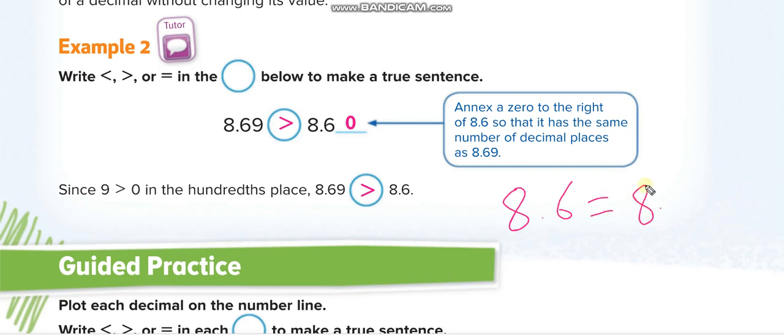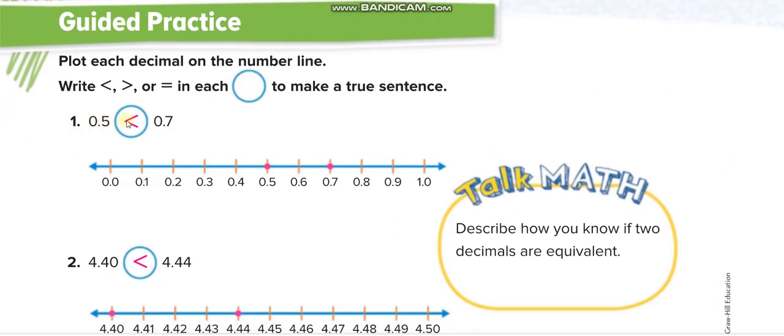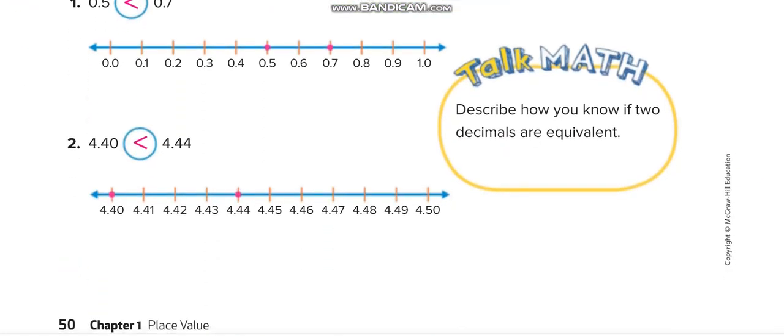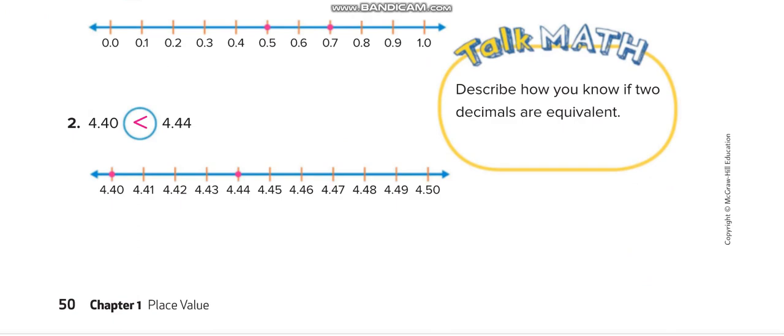Let us move down. In the guided practice, here 0.5 is less than 0.7. Clear. Here, 4 ones, 4 tenths, 0 hundredths; 4 ones, 4 tenths, 4 hundredths. So this one is more. 4.40 is less than 4.44.